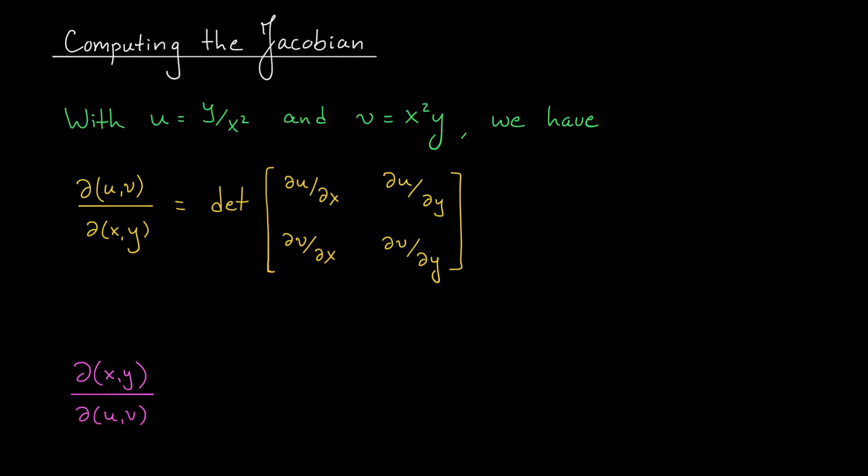Okay, we've come up with a transformation to simplify our region R. We're going to set u equal to y over x squared and v equal to x squared y. We know from our change of variables formula that we're going to need the Jacobian partial xy over partial uv. But right now, we have u and v expressed in terms of x and y. So it's probably going to be easier to start by finding this inverse Jacobian, partial uv over partial xy. We'll invert our result at the end.